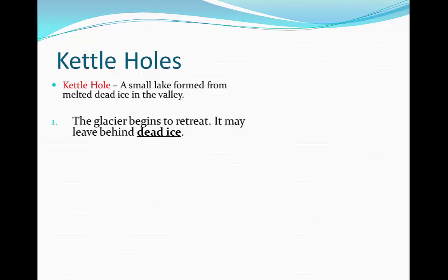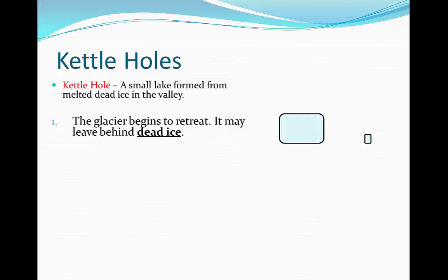Firstly, the glacier begins to retreat. As it does so, it leaves behind dead ice, which is literally chunks of ice left behind in the valley which have been removed from the glacier. So as you can see now, the glacier is the big block on the left and we have dead ice left in the valley.